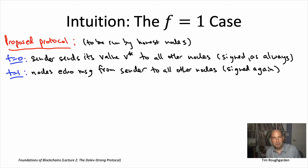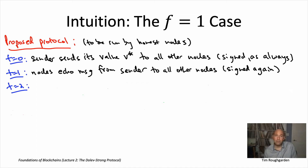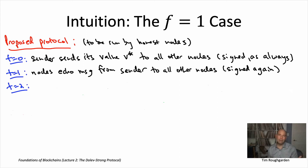The next time step, t equals two, is the last one. All nodes are responsible for figuring out their final output. Two trivial cases: if you're the sender and you're honest, just output v star — you knew the answer up front. If you're a non-sender but you've only ever seen messages that reference a single value v star, output that — why would you ever output anything you've never heard of?